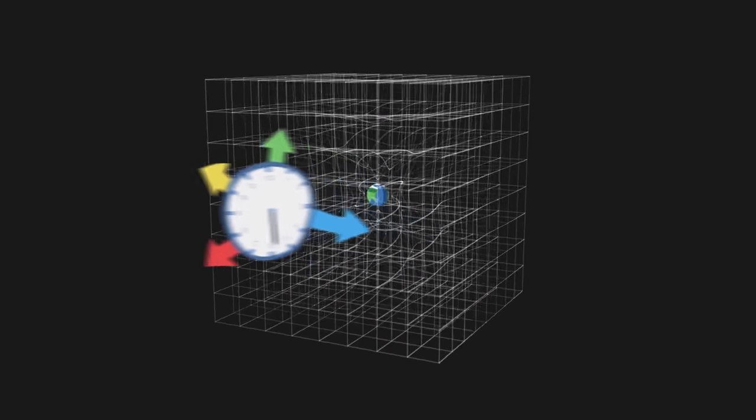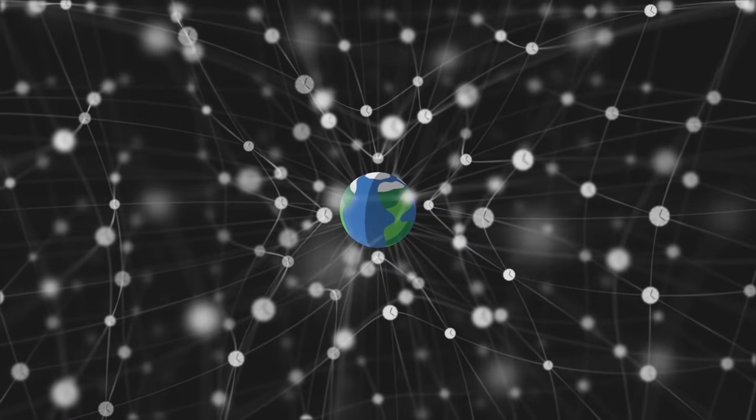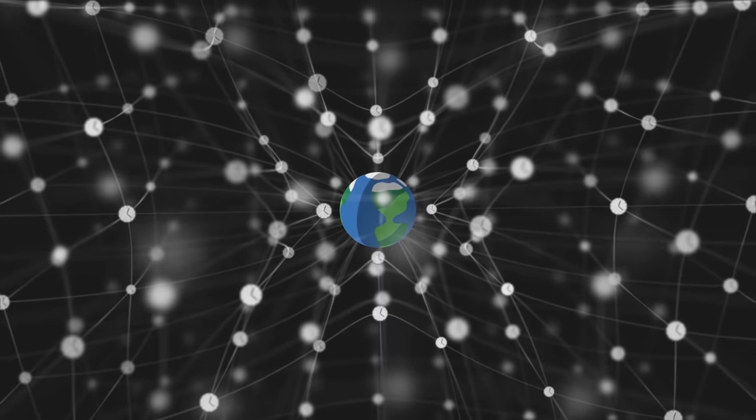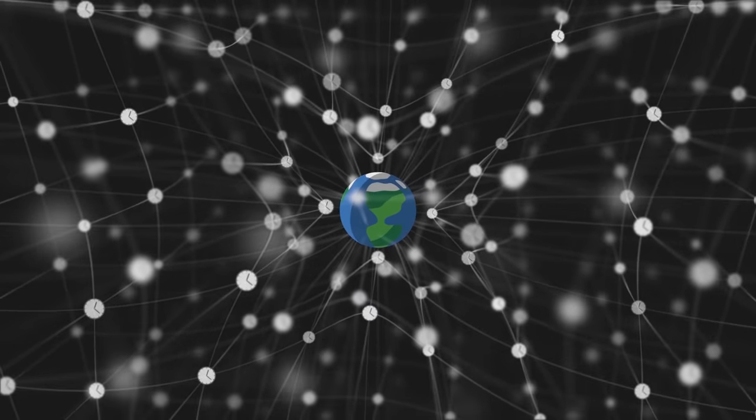A first idea would be to add small clocks to our diagram at each point of the grid. In this way, the space grid becomes a space-time grid, and we understand that time can flow differently depending on where we are.